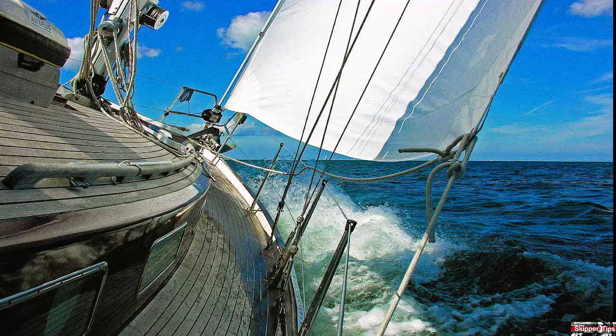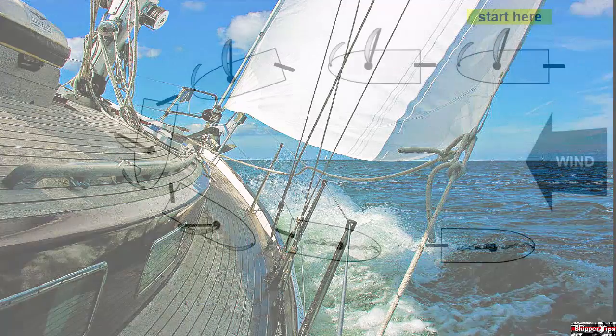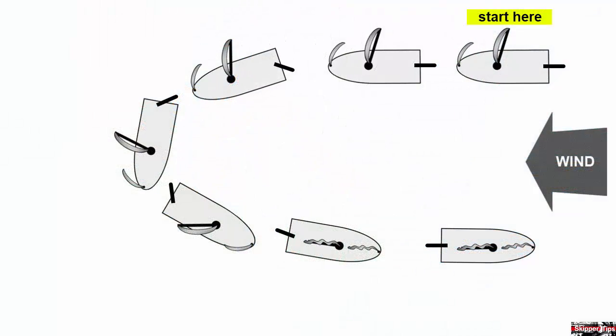Follow these easy tips along with the illustrations. Here we are under our mainsail and a working jib, and we get onto a deep broad reach where the wind is astern. With a wheel, turn the wheel all the way over to one stop to turn the vessel up into the wind. If using a tiller, hold the tiller all the way over to one side to turn the vessel up into the wind, as shown.